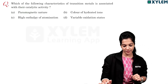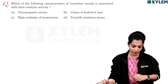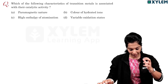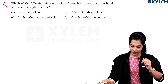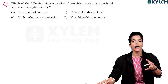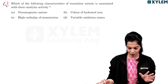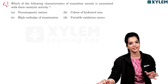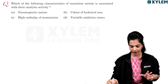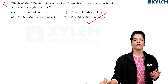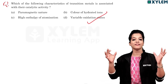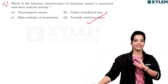Which of the following characteristics of transition metals is associated with their catalytic activity? Options are: A) paramagnetic nature, B) color of hydrated ions, C) high enthalpy of atomization, D) variable oxidation state. Option D, variable oxidation state, is one reason. Large surface area is also a reason for catalytic activity.